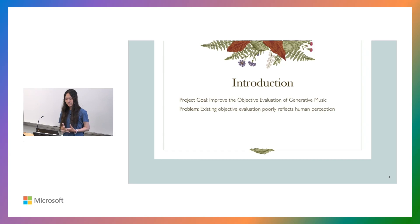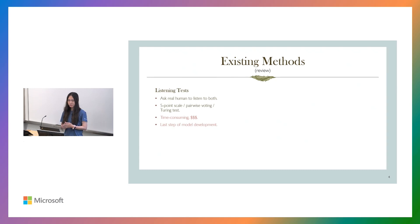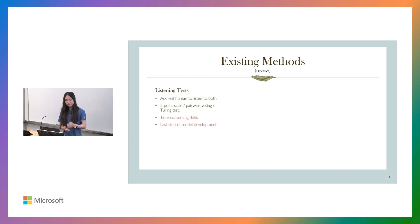Our primary project goal is to improve the objective evaluation of generative music. This is important because existing objective evaluation methods poorly reflect human perception. Current existing methods include: first, most researchers conduct listening tests. They ask real humans to listen to both the music generated by their models and the music composed by human composers. They either ask them to rate musical quality on a five-point scale, use pairwise voting to vote which one is better, or use a Turing test asking them if they think the audio is composed by human or generated by machine. However, listening tests are time-consuming and costly, so this is only suitable as the last step of model development.